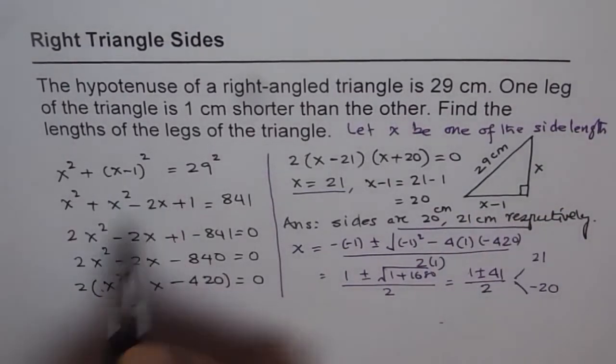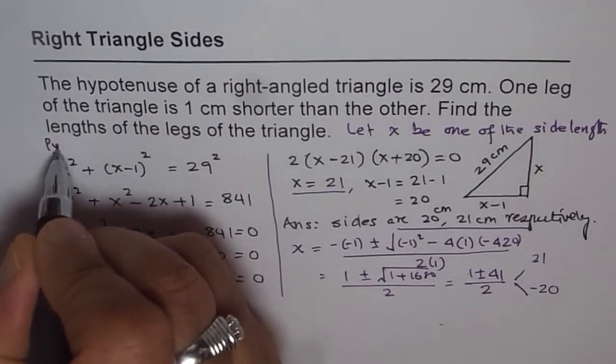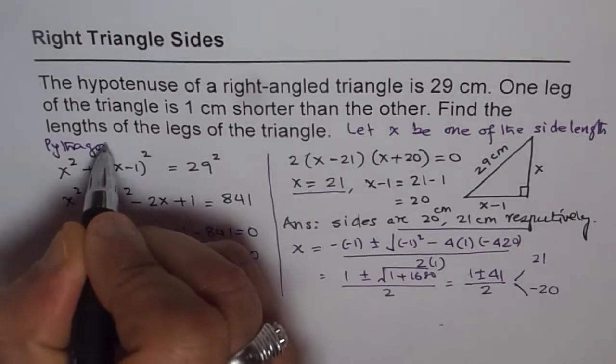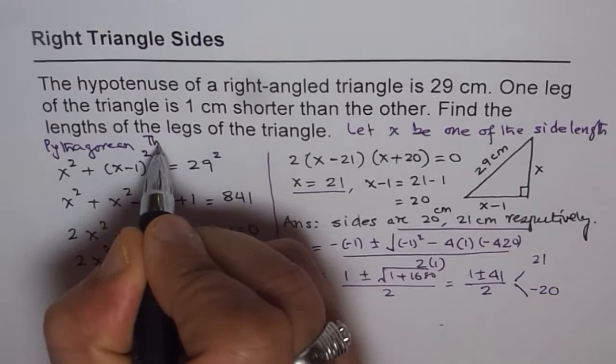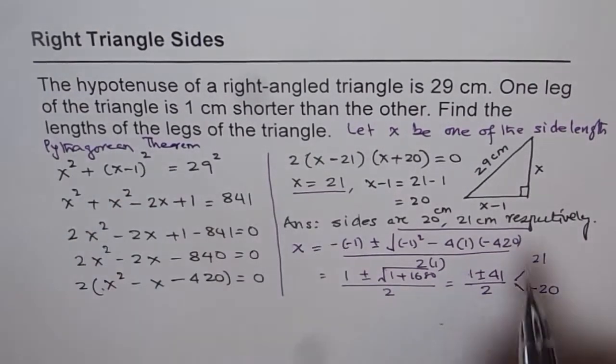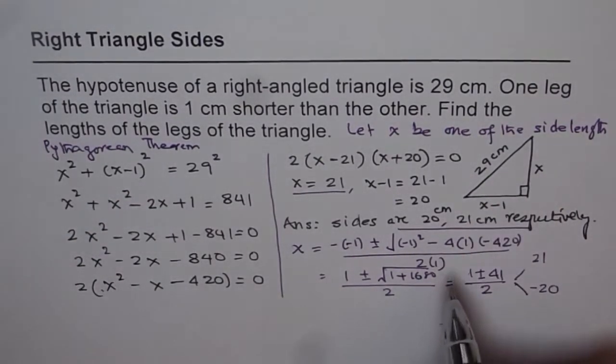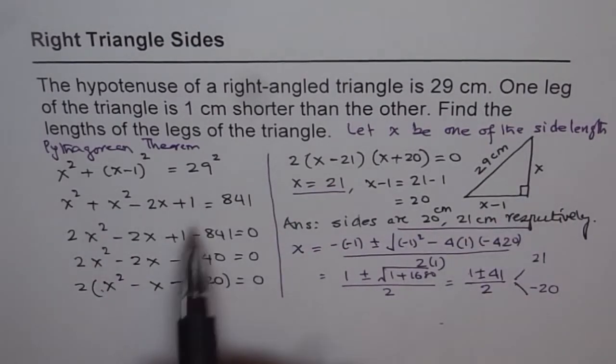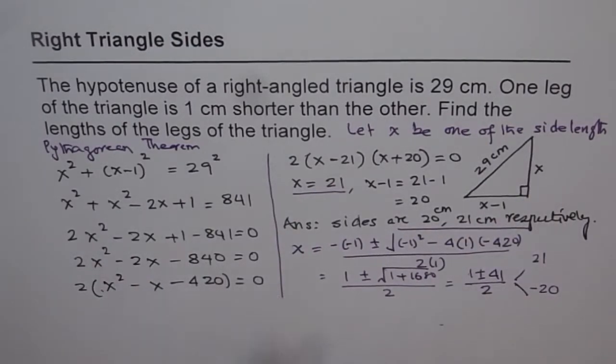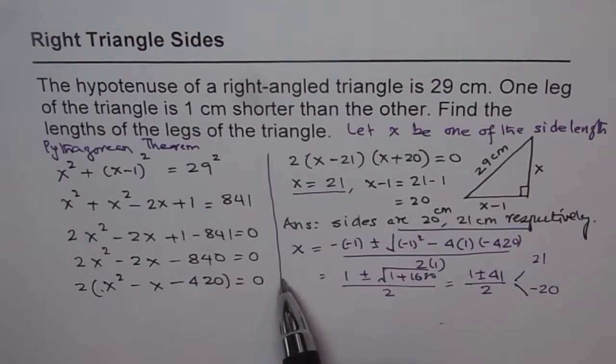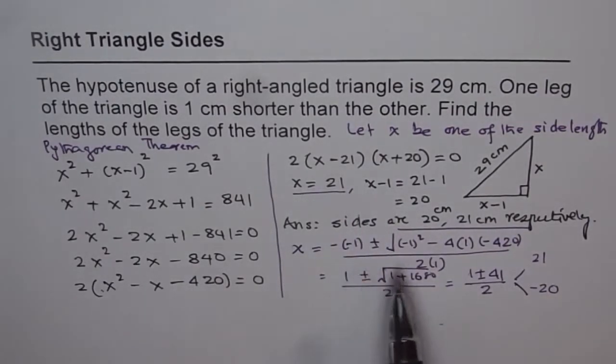Then the other will be x minus 1. And then we used Pythagorean theorem, which is a squared plus b squared equals to c squared. So we got our equation, simplify it. And then, as you solve quadratic equation, either by factoring or by quadratic formula, and get your answer.